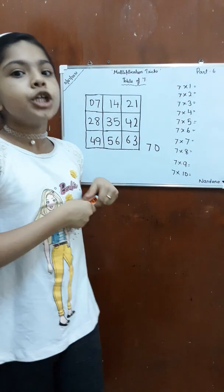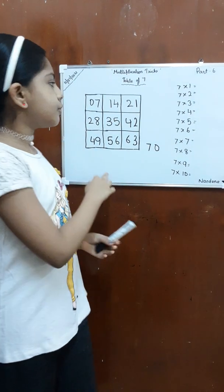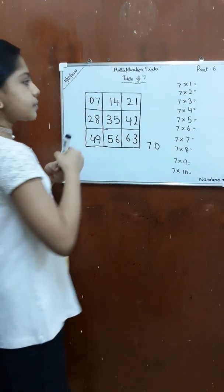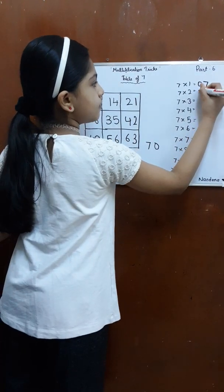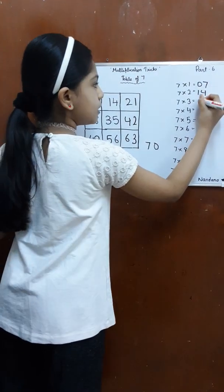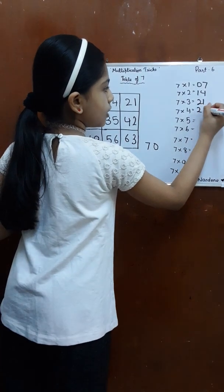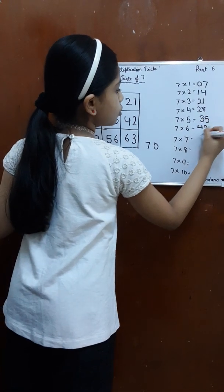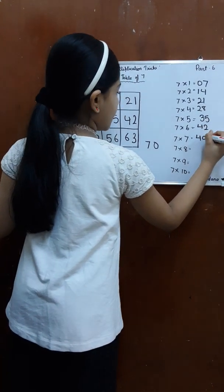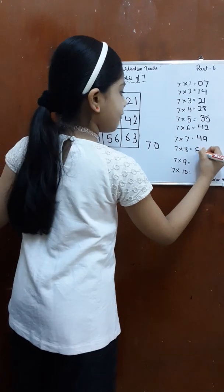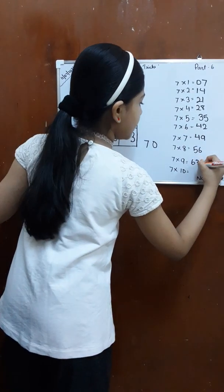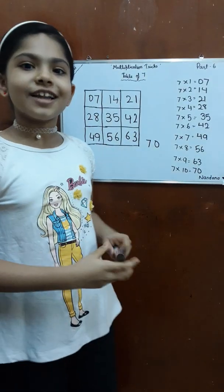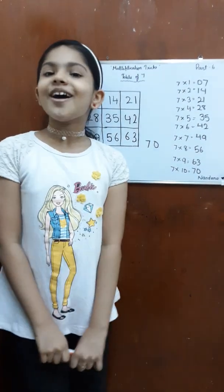There we go, we got the table of 7. To complete our steps, we have to write all these numbers in order here. So let's write: 7, 14, 21, 28, 35, 42, 49, 56, 63, and 70. There we go, we got the table of 7. Thank you all. Bye.